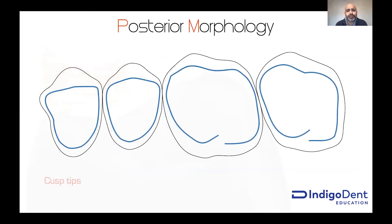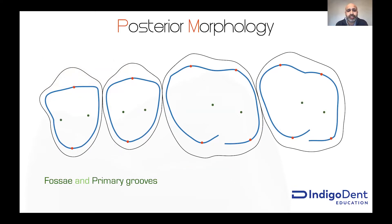We can then start to place our cusp tips. On the premolar teeth, the palatal cusp tips are a little more mesial — not directly through the middle of the tooth, they go a little more mesial. When we place the primary grooves and fossae, the pits within these teeth, you can see on the first and second premolar they are slightly different. On the first premolar the pits are a little further apart; on the second premolar they're a little closer. As soon as you put the grooves in those places, they start to look a lot more like teeth.